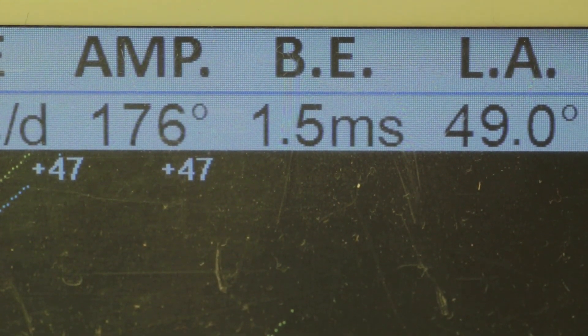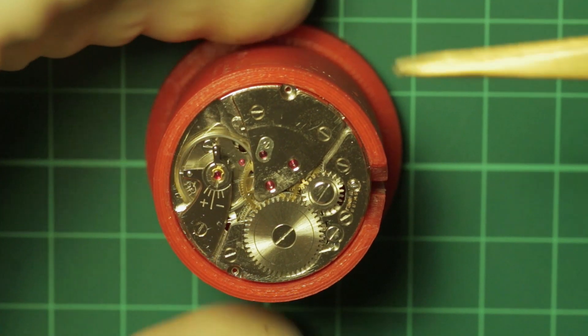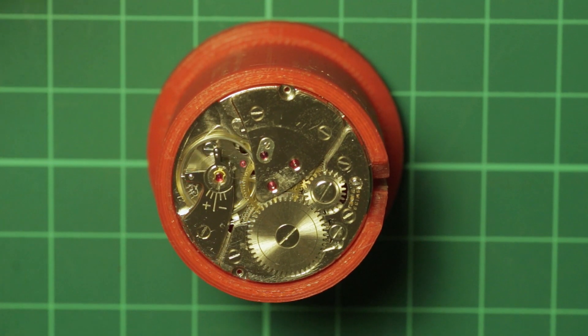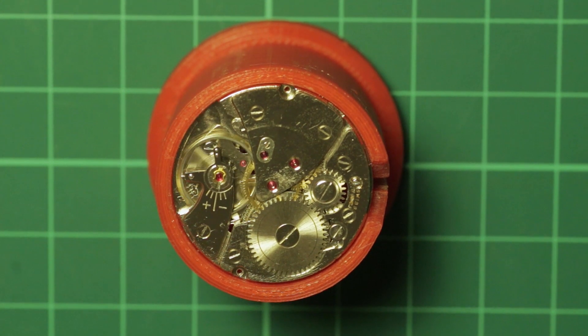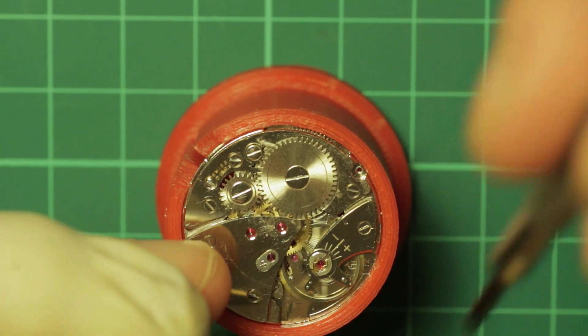So there we go, a quick simple little tutorial on calculating an unknown lift angle if you have a watch that you cannot find the lift angle for. And just to complete this, I'm going to show you how relatively easy it is to clean up the mark.